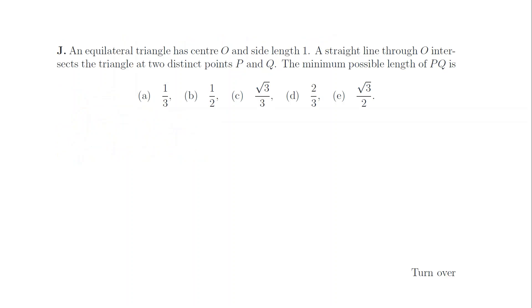1j. Imagine a straight line through O and one of the corners of the triangle, then rotate it by an angle theta. That function is periodic with period 60 degrees — every time the line goes through another corner of the triangle — and it's symmetric in theta. The minimum occurs halfway between those maximum values, when the line is parallel to one of the sides. Some geometry shows that the length of PQ is 2 thirds, and the answer is d.